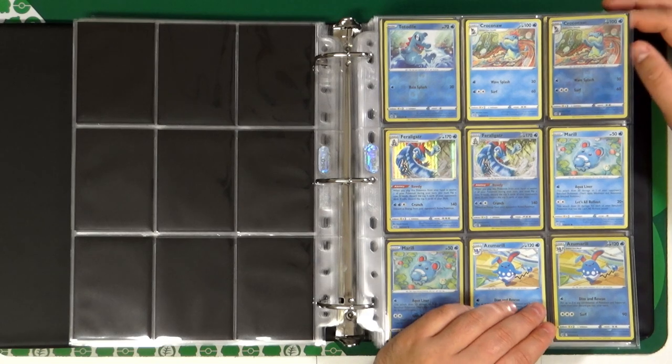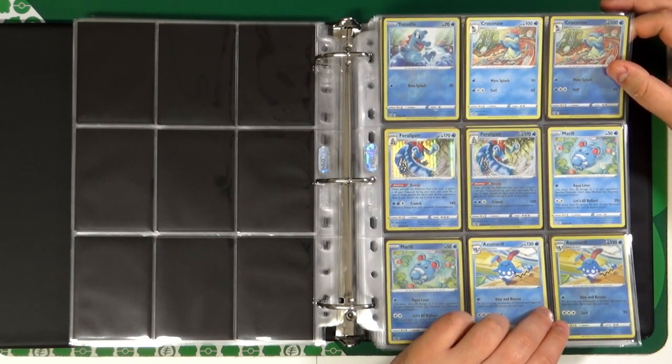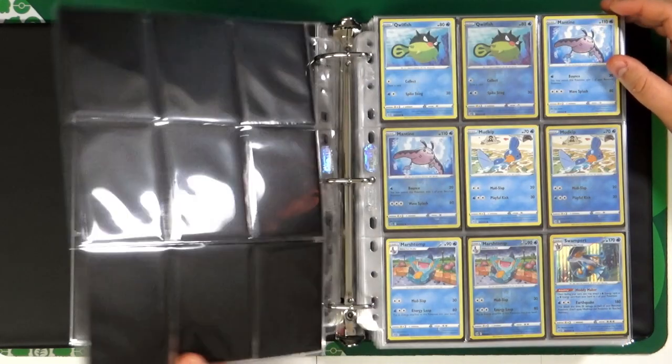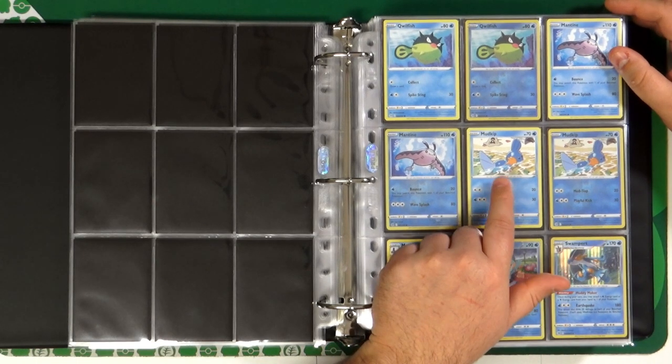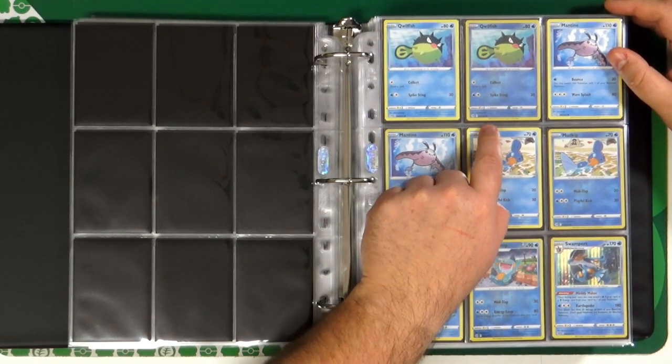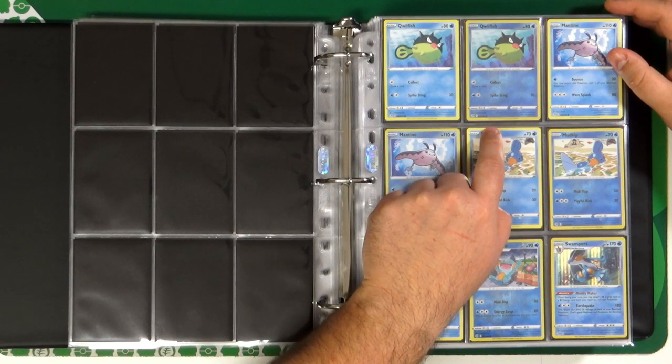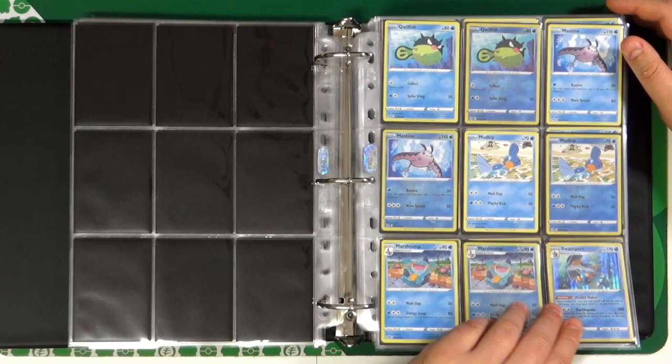Feraligatr, that is a card that I want to see in its V version, together maybe with Meganium. Qwilfish, Mantine, the Mudkip, and here you can see the Sandygast and the top of the Sandygast is present in the Araquanid card.